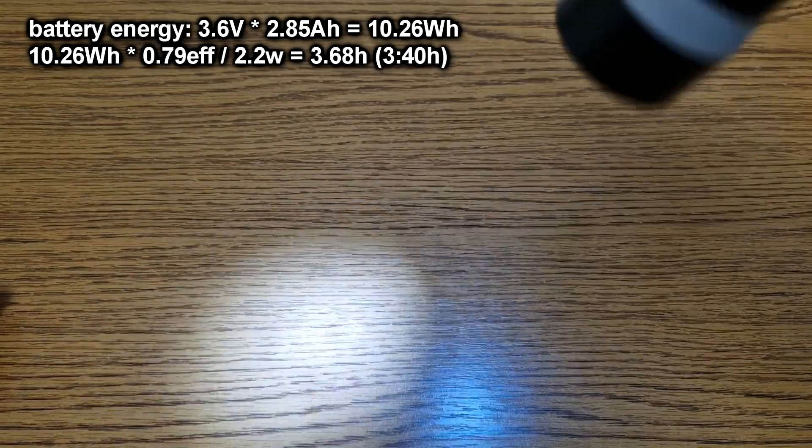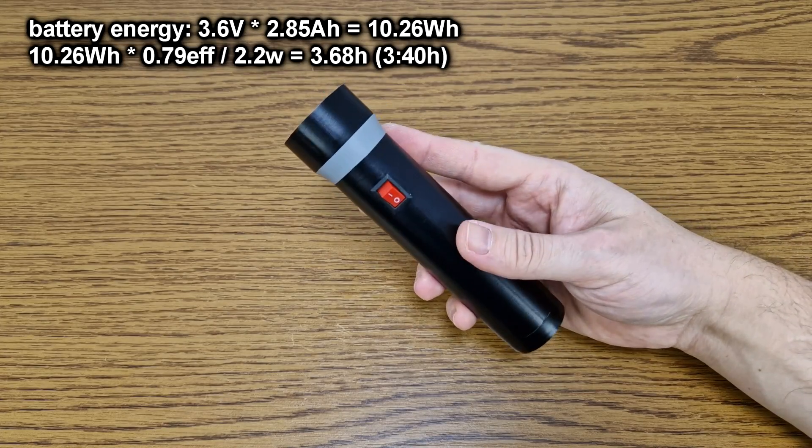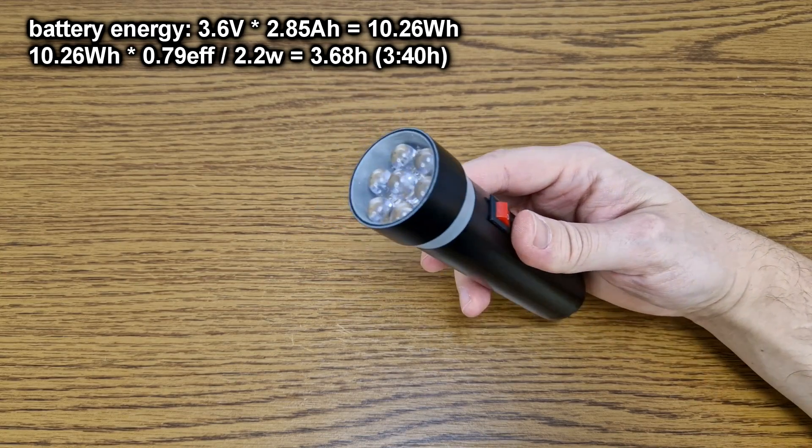With a 2.85 amp hours battery and an average efficiency of 79%, this 2.2 watts flashlight should last 3 hours and 40 minutes.